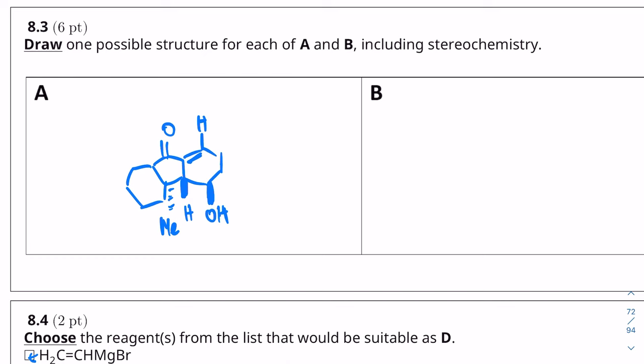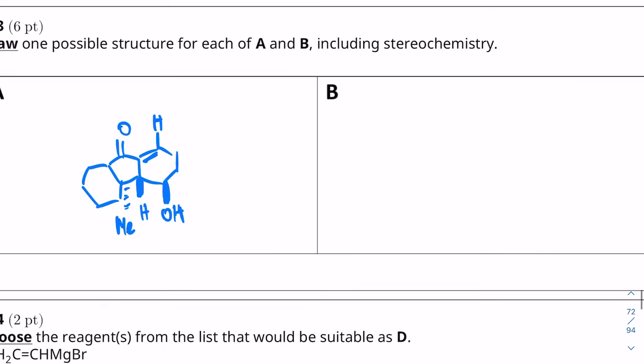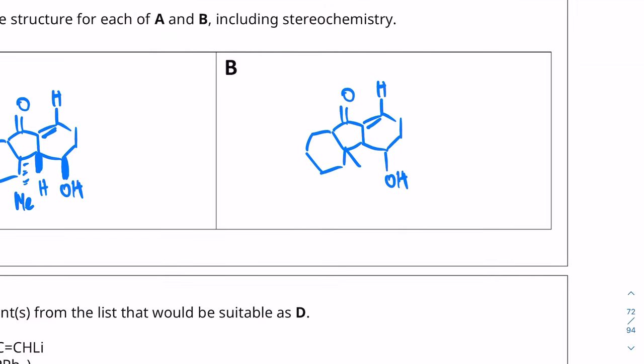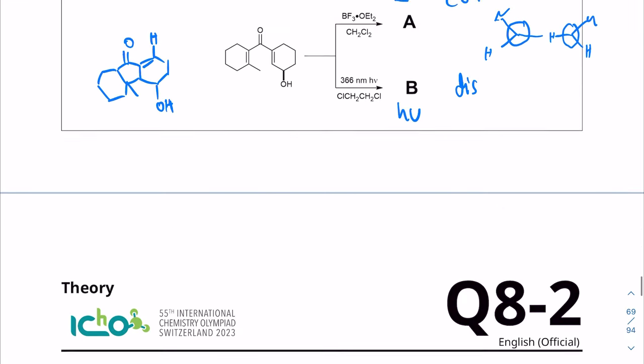And then for B, which is going to be the disrotatory, we're going to end up with both bonds on the same side. So once again, the double bond is on the right. So now we're going to have both either going down or both going up. I'm going to draw both going down because that's the actual product. But if you drew both coming up, that would also be an acceptable answer according to the solutions. All right, moving on to the next question.